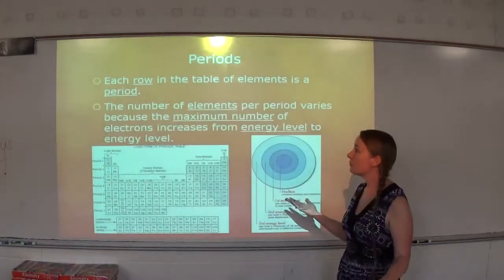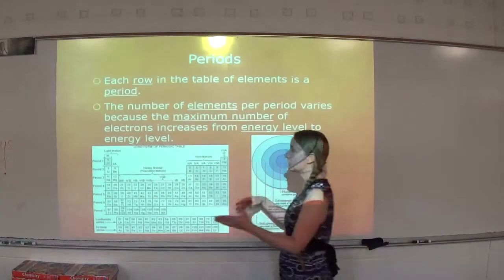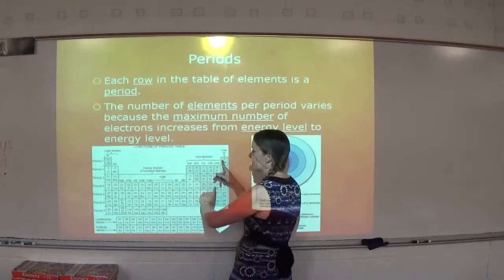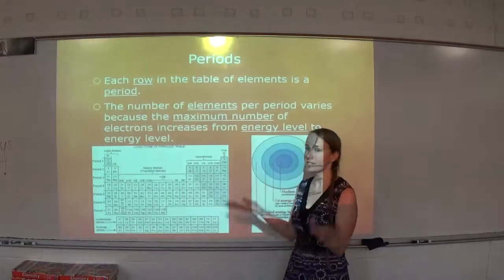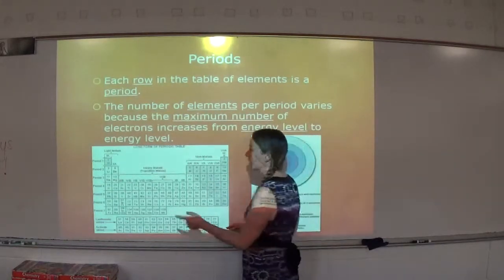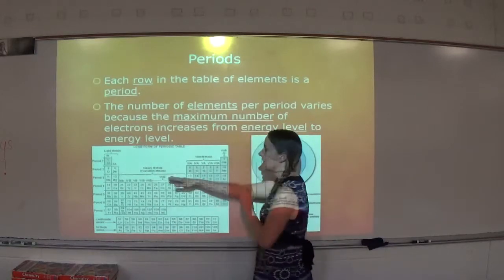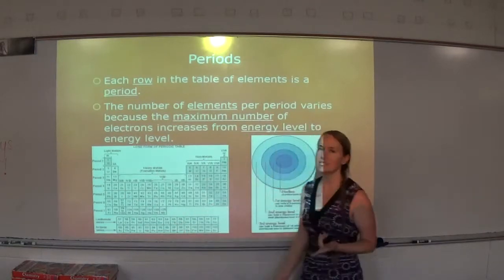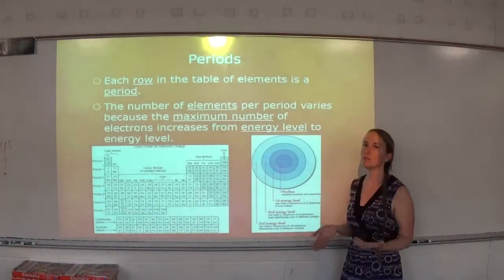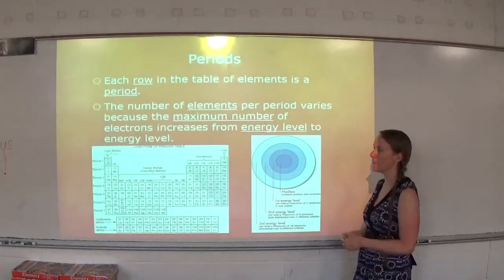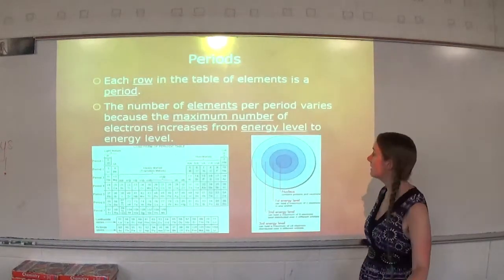That's why it's not just a perfect rectangle. The first energy level can only hold 2 electrons, so the first row only has 2 elements. The second energy level can hold 8 electrons, so if you look, there are 8 elements. Once we get below the second, it starts doing some weird things where you really need to move on to chemistry to understand what's happening there, because we only go into Bohr's model in this class.